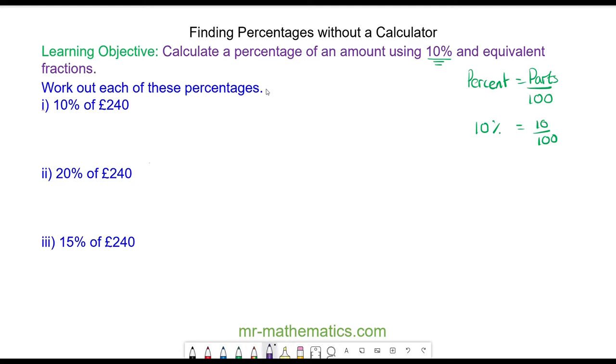We can simplify this fraction by dividing both the numerator and the denominator by 10, so 10 over 100 is equivalent to one tenth. And one tenth as an operator is a division of 10, which is really important for today.